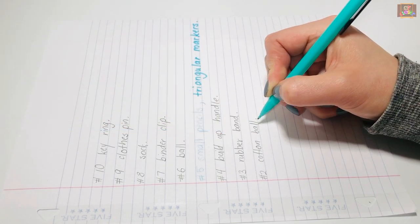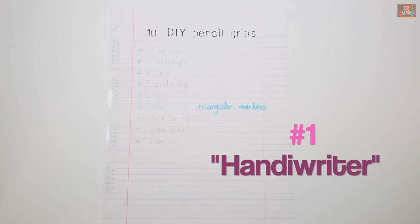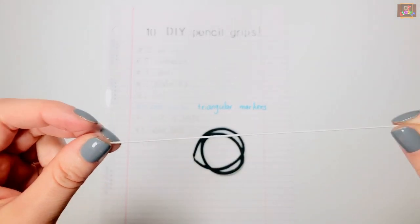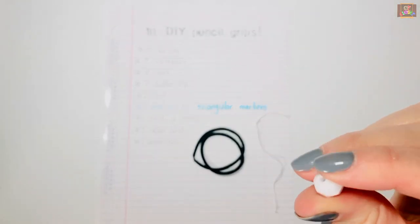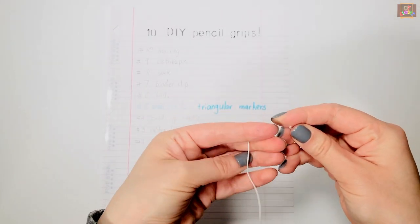And my number one favorite is inspired by Handy Writer. All you need is two hair ties, a 5-inch elastic, and a small bead. Lace the elastic through the bead and make two knots.